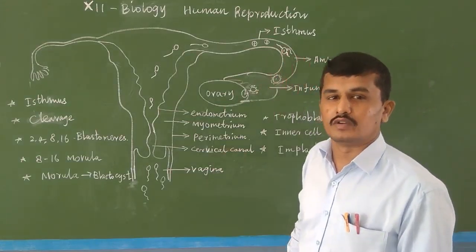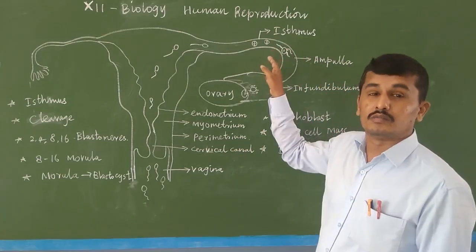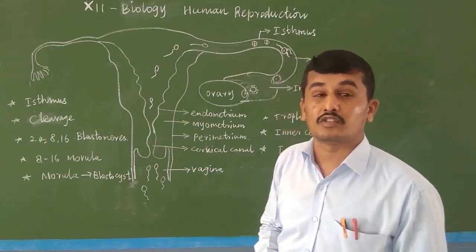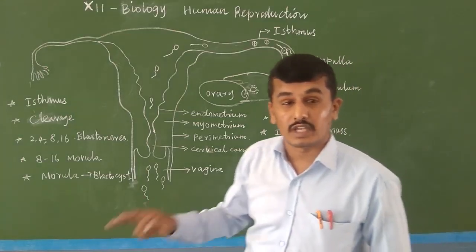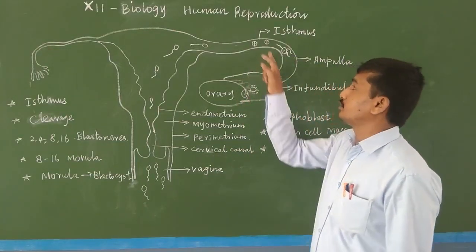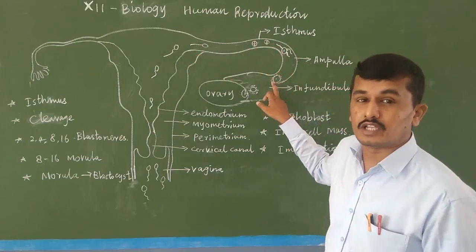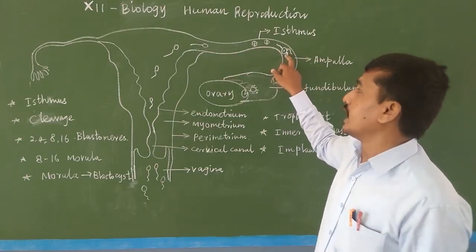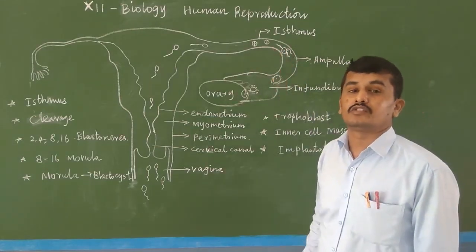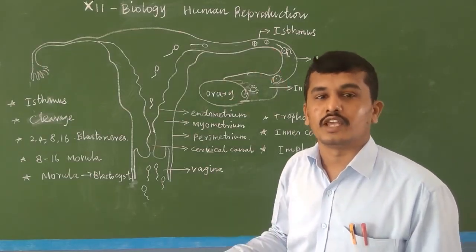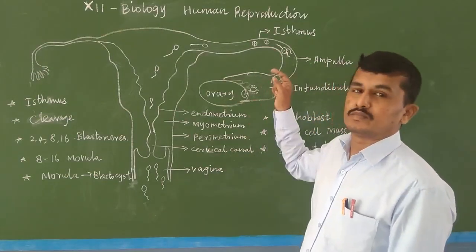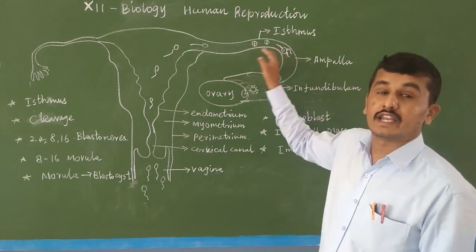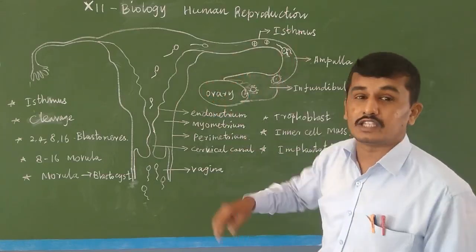After fertilization, the ovum is converted into a zygote. The zygote slowly develops by mitosis division. Mitosis is equational division where the chromosome number remains the same. The sperm contains 23 chromosomes and the ovum also contains 23; after fertilization, 23 plus 23 gives 46 chromosomes in the zygote. The process of dividing the zygote into an embryo and then into a blastocyst is known as cleavage.